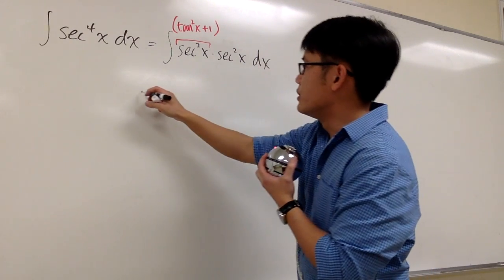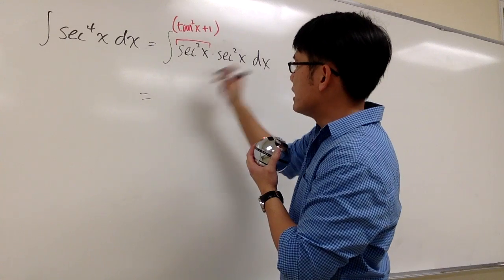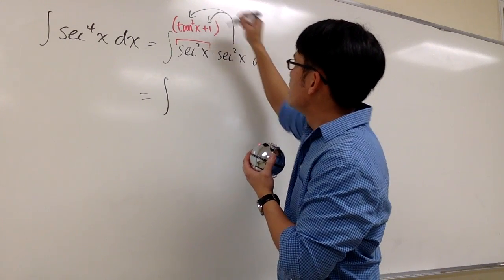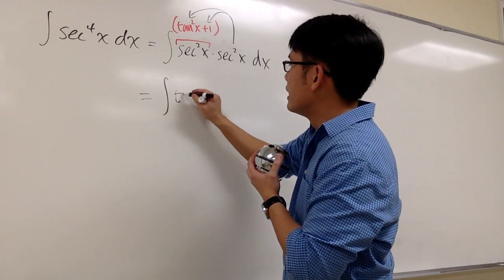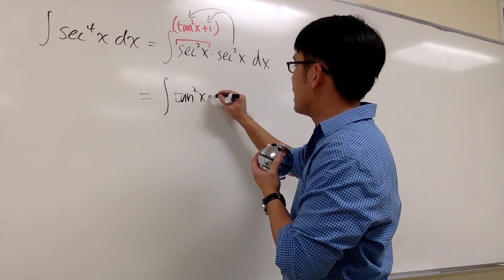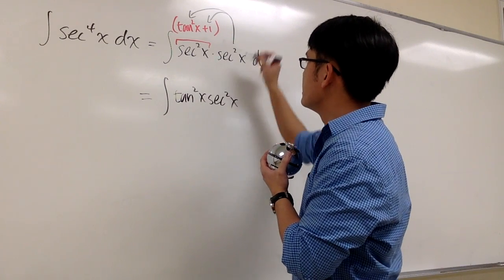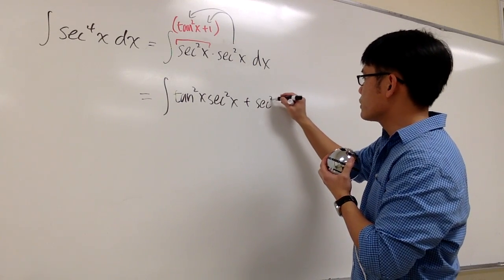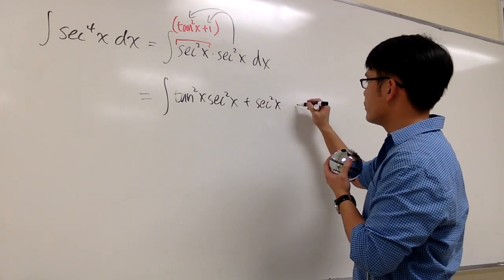So this is the same as the integral of, let's distribute this backwards, this times that, which we have tangent squared x times secant squared x, and then plus secant squared x plus 1, which is just secant squared x.